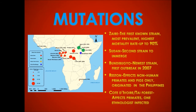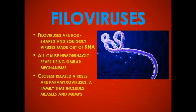The Côte d'Ivoire strain, also known as the Taï Forest strain, was discovered on a chimpanzee reserve, where it infected an ethnologist who had performed a necropsy on an infected chimpanzee. Ebola belongs to a family known as Filoviridae, which includes the Marburg virus, whose symptoms are nearly indistinguishable from those of Ebola. Filoviruses are long, rod-shaped, and bent into U's, sixes, and more complicated squiggles. They are most closely related to paramyxoviruses, which cause measles and mumps — diseases which share some common symptoms with Ebola.